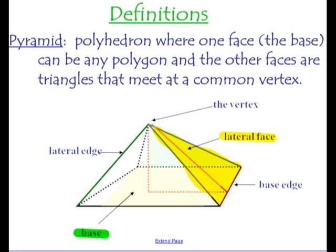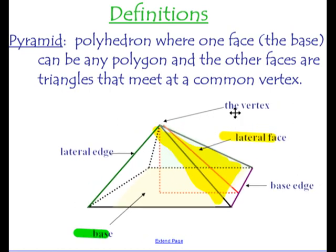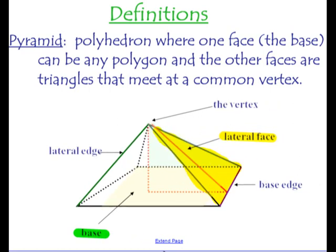A pyramid — you probably know what a pyramid is, what it looks like, but I just want to define it clearly. The pyramids you're used to seeing have a square base and then a bunch of triangular faces that all meet at one point up at the top, which we call the vertex.